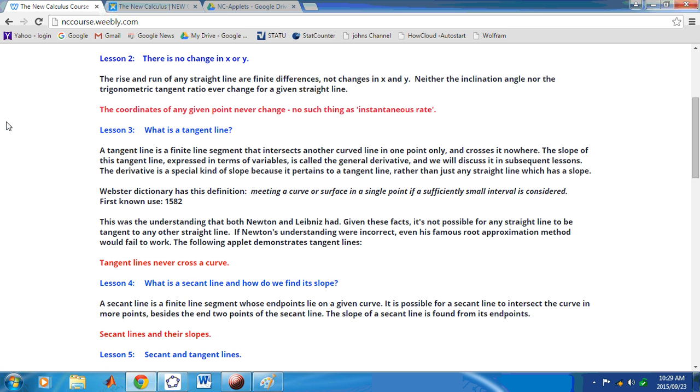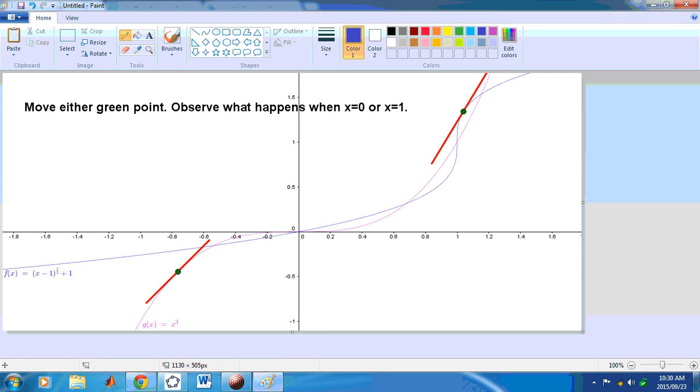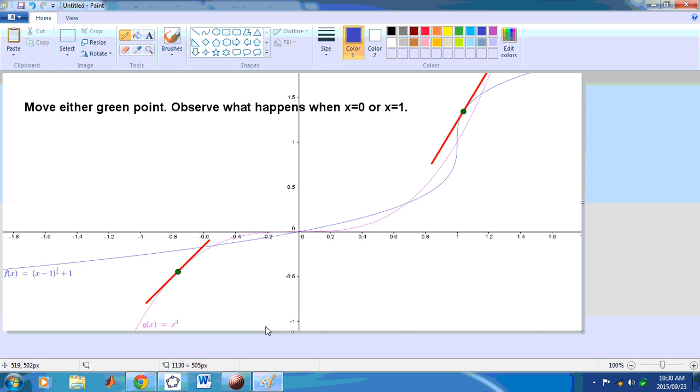The slope of this tangent line, expressed in terms of variables, is called the general derivative. And we will discuss this in subsequent lessons. But to give you an idea of what is a general derivative, if you just look over here, in this case, the general derivative of this red line is 3x squared. That's the general derivative, g of x is 3x squared.